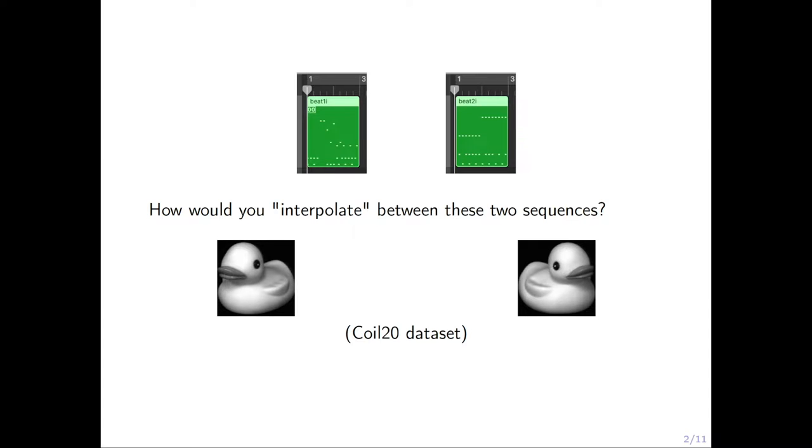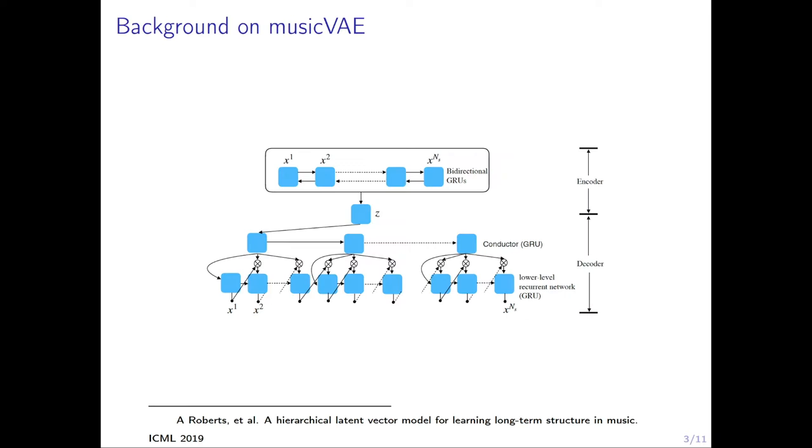Then we find the trajectory there. Then we get a point on the trajectory and project it back to the image space. For music data, it's similar. We can use a generative model to achieve this.